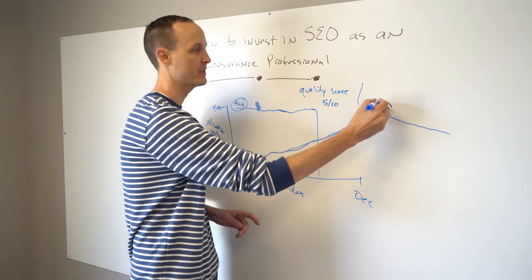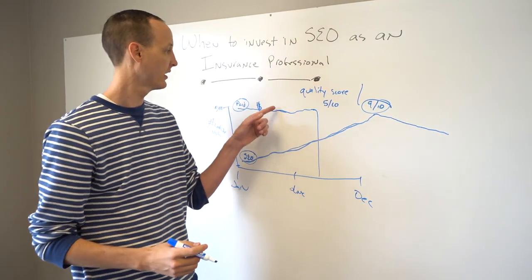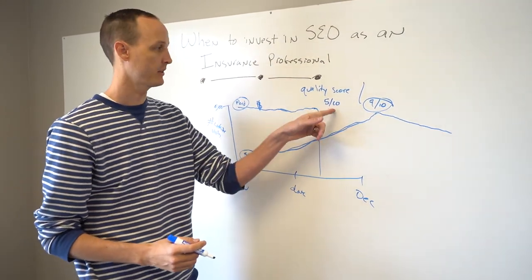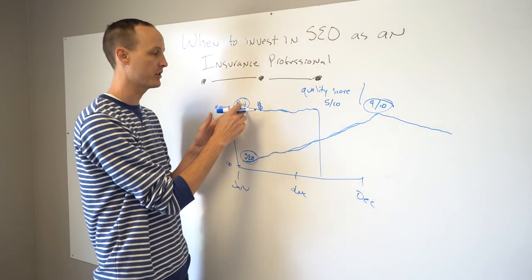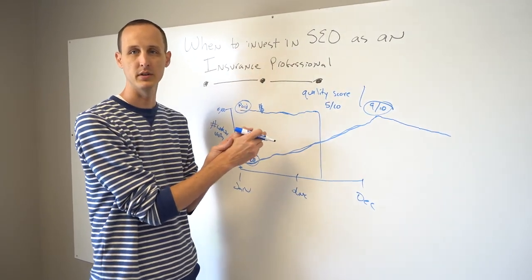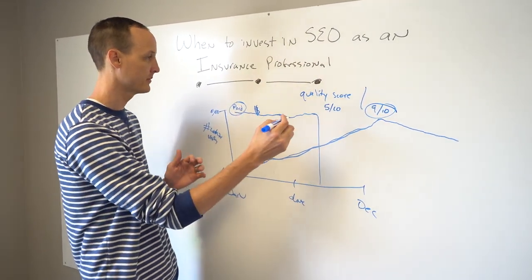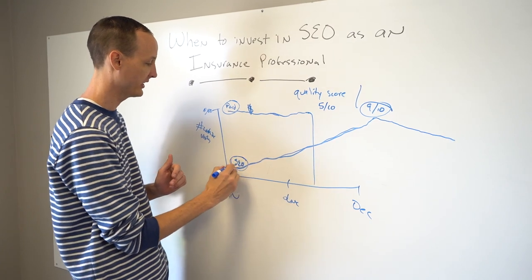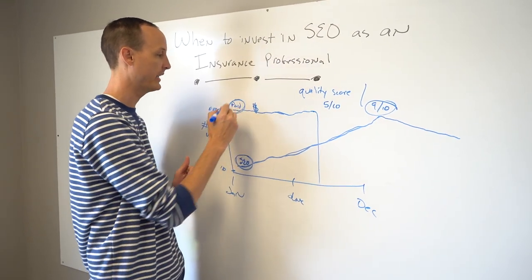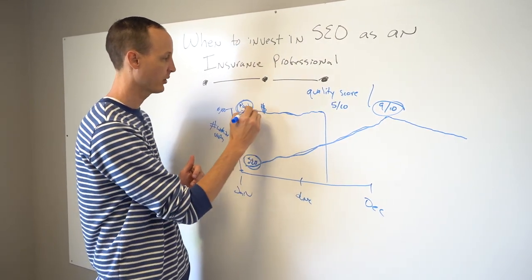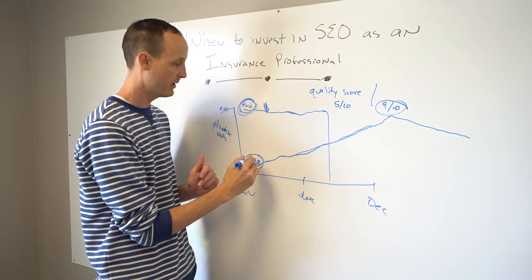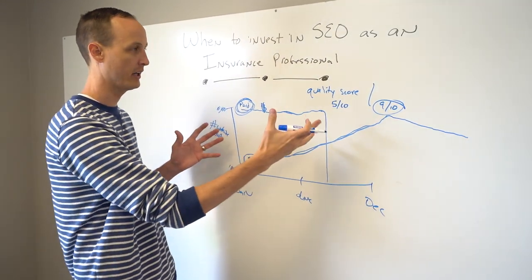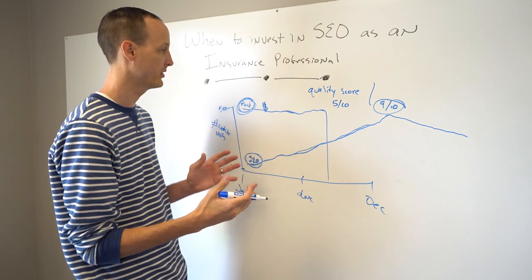Google is actually going to give this person a cheaper click on paid than this person, because you're sending their traffic to a better landing page. So what happens is, if you really invest in your SEO the right way, and you're doing paid as well, you can increase your value of your paid traffic, because your organic SEO is better, and your quality scores are increasing on your landing page. They're connected.